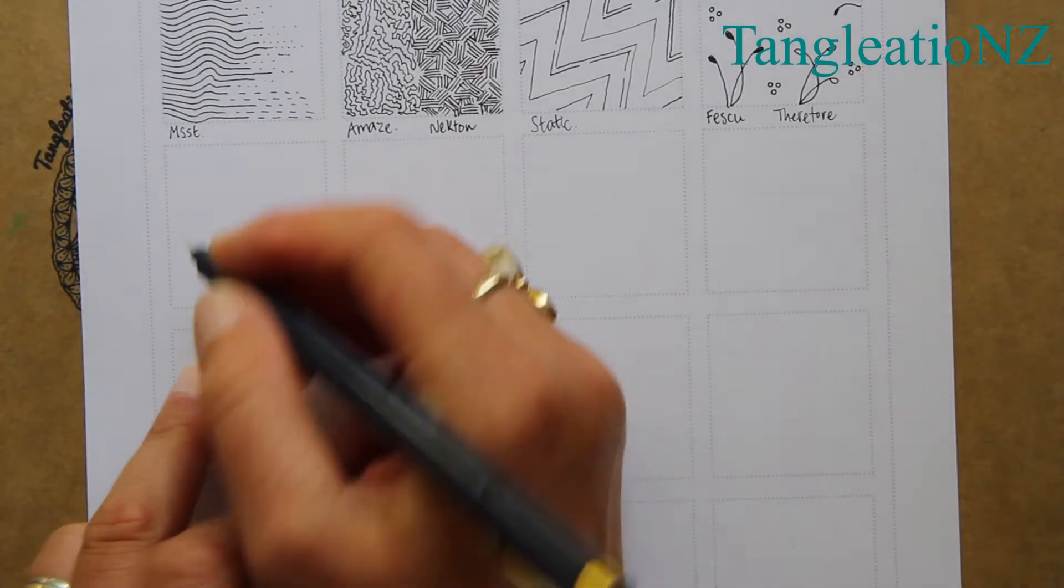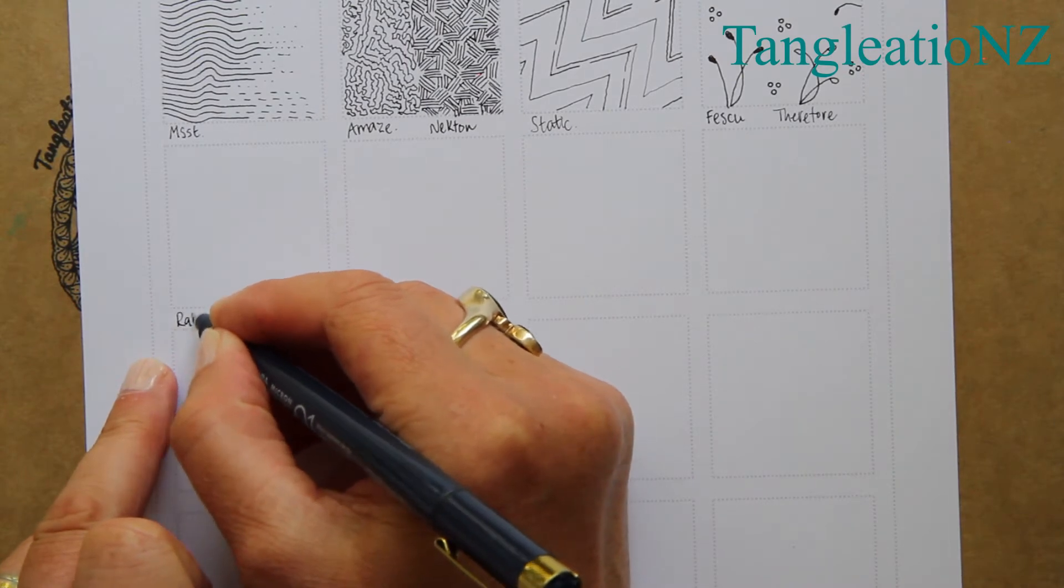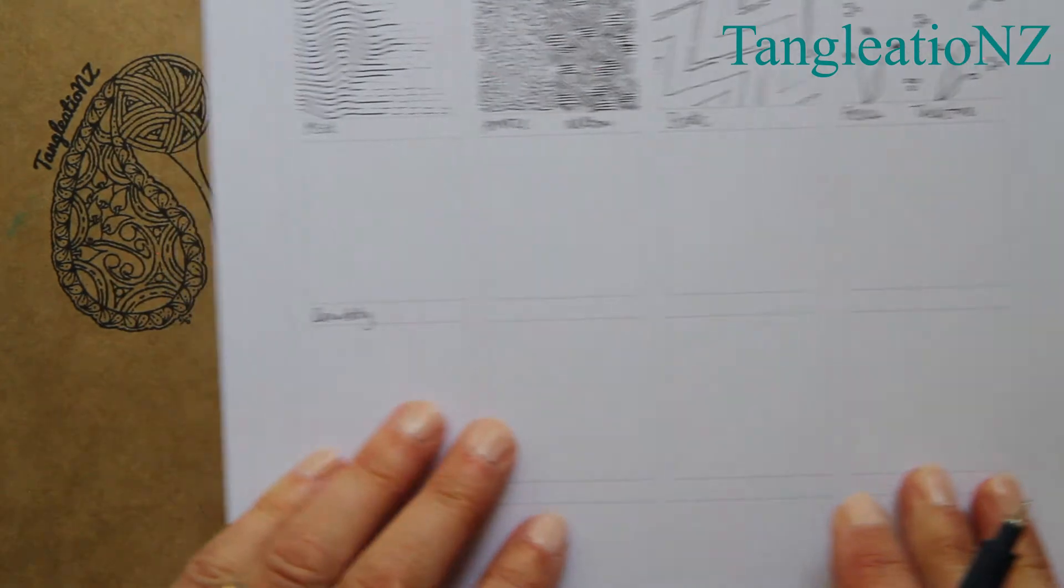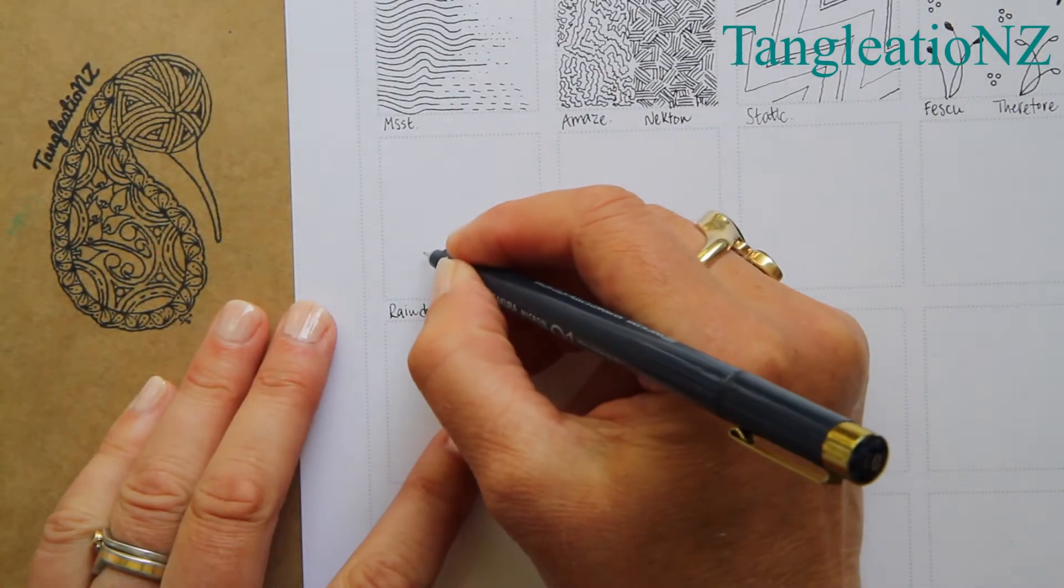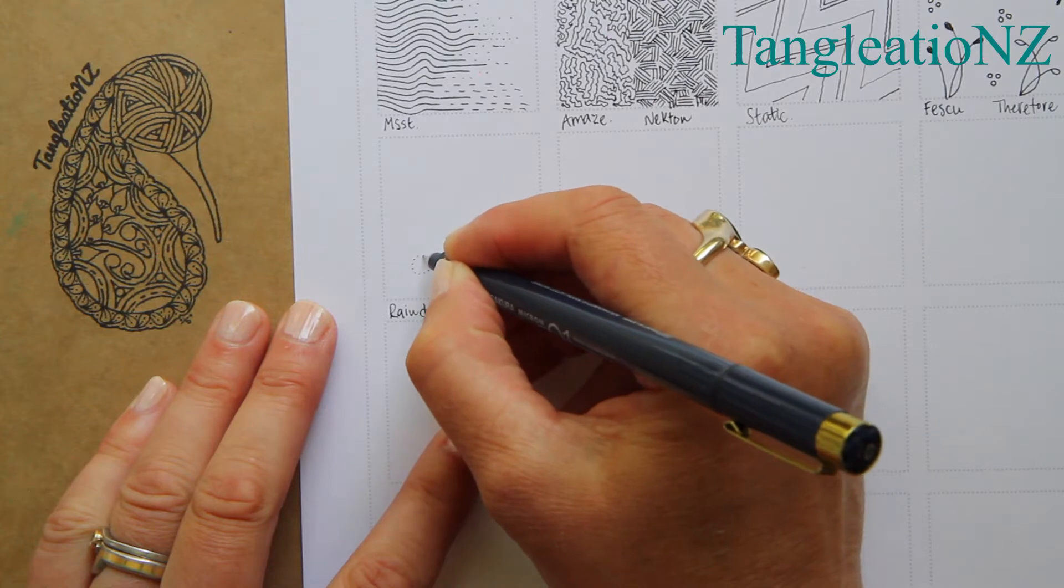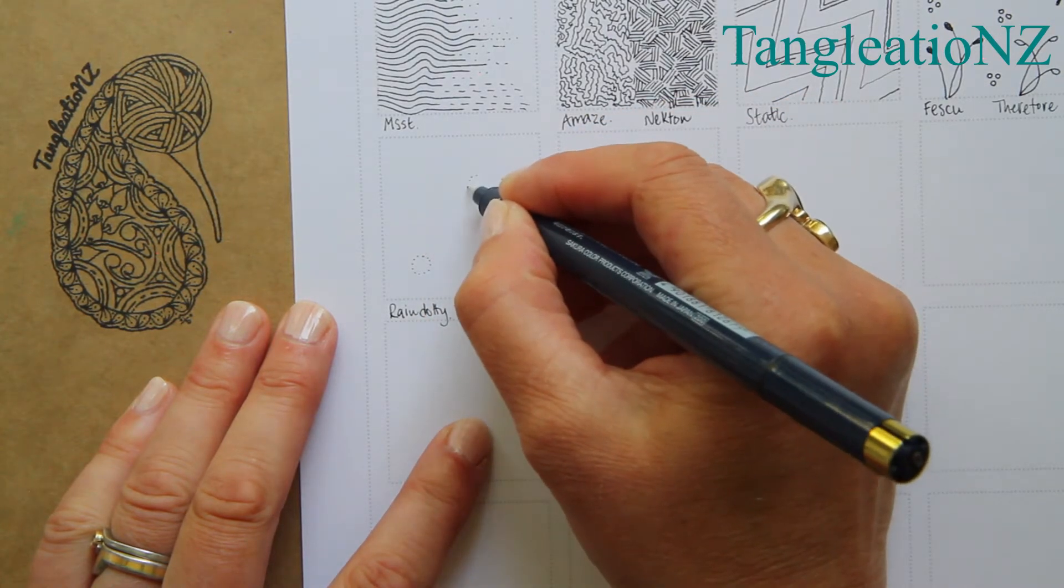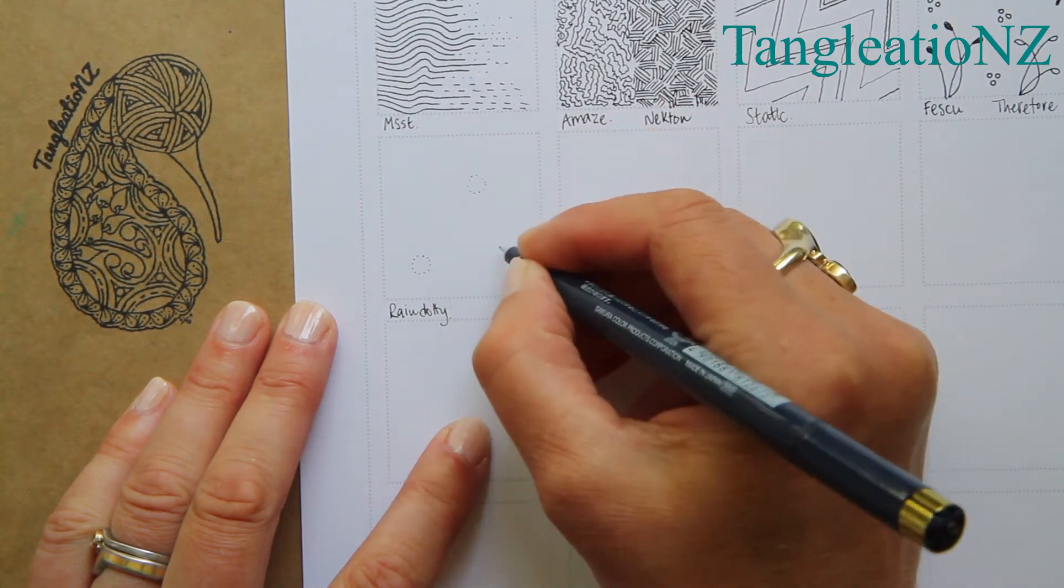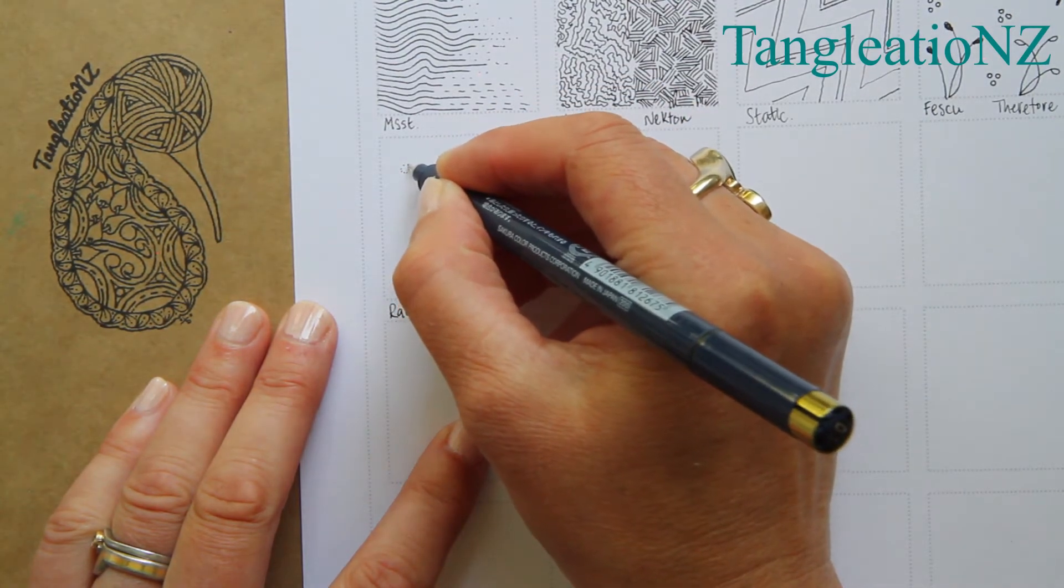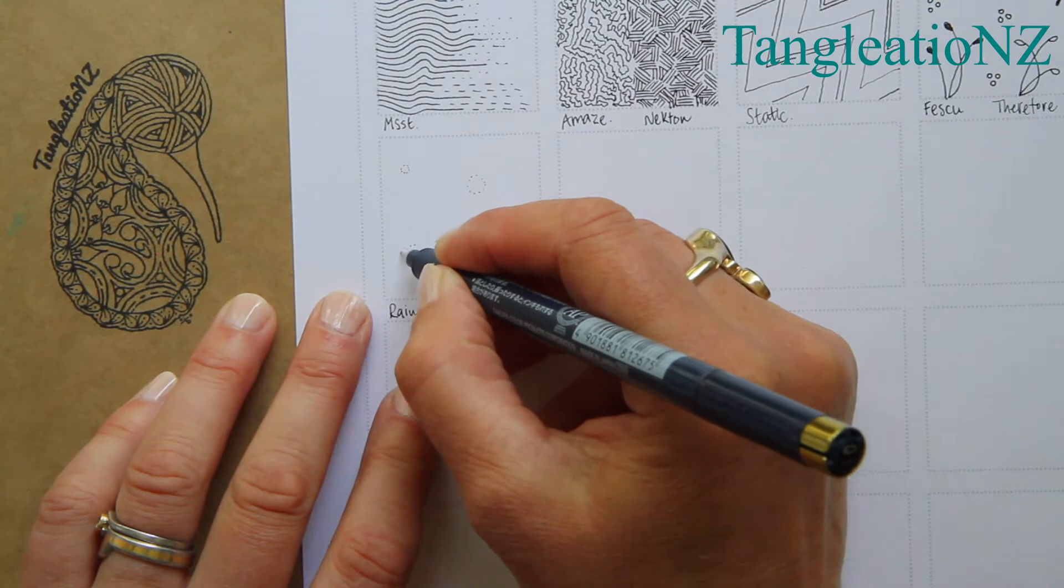The first one I want to do is a lovely wee tangle called Rain Dotty. It's so simple and easy to do. Instead of drawing full orbs in an area, I'm just going to draw them with dots. I'll choose a few spaces within the section and then do a bigger dot of orbs around them.